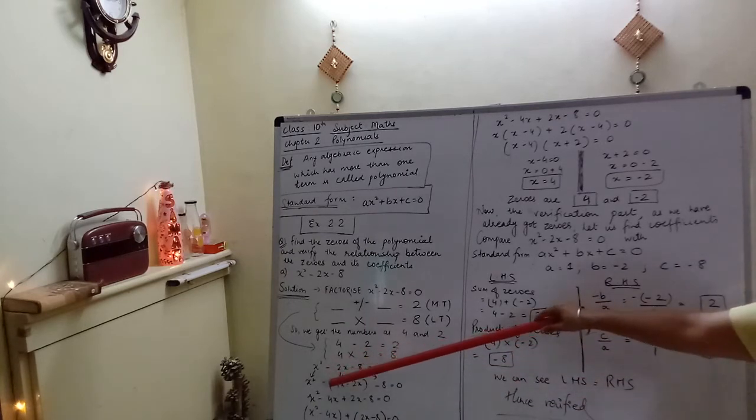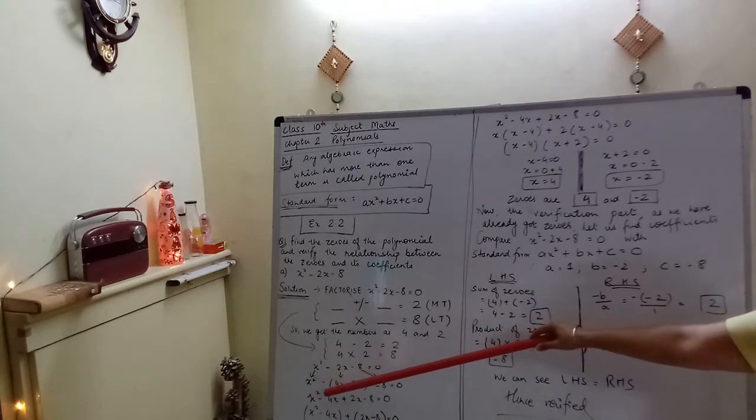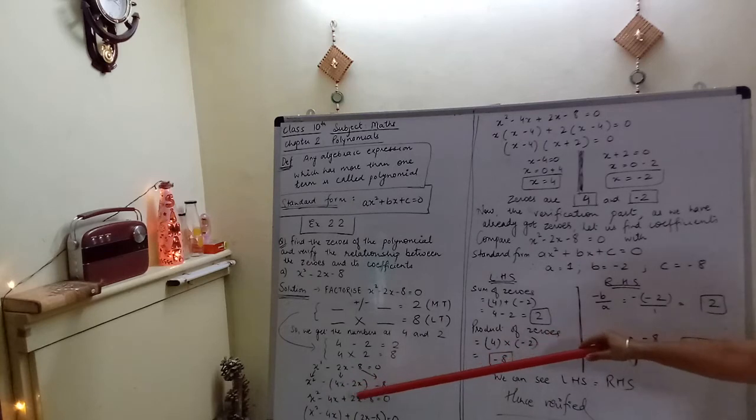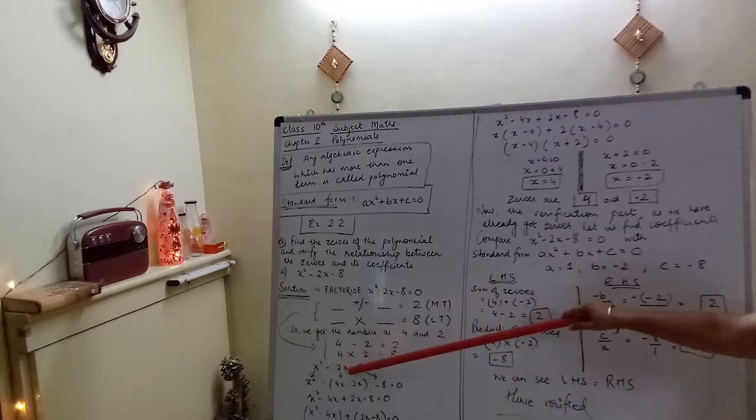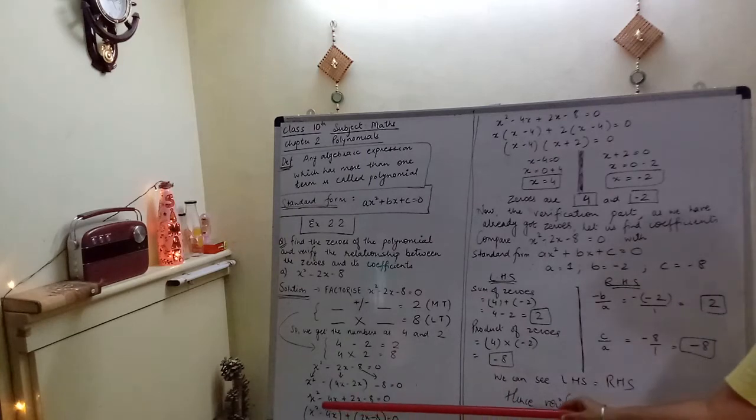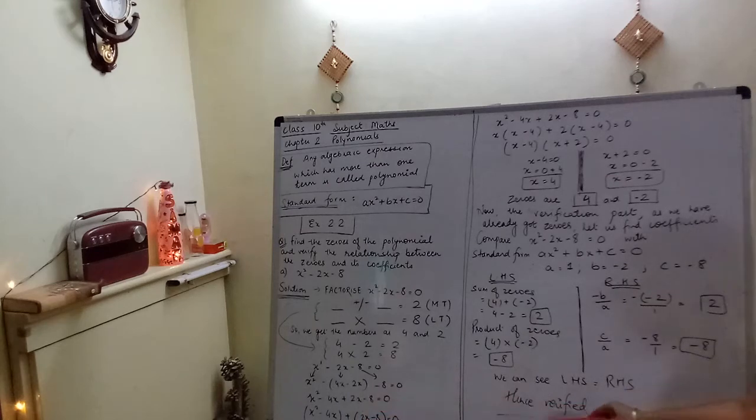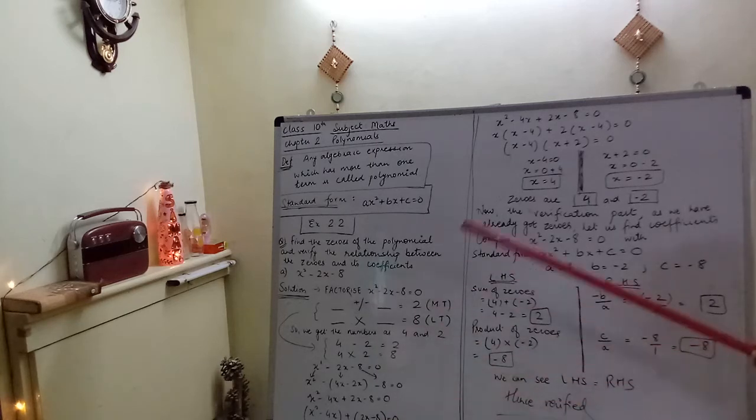Signs inside change. So it will become x square minus 4x plus 2x, so this minus and minus will become plus 2x. Now we got here 4 terms. We will regroup them, two terms and two terms.